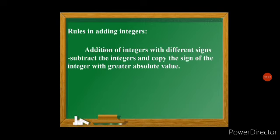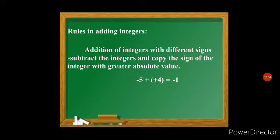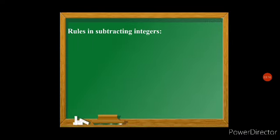For addition of integers with different signs, subtract the integers and copy the sign of the integer with the greater absolute value. For negative 5 plus positive 4: 5 minus 4 equals 1, and since the absolute value of negative 5 (which is 5) is greater than 4, the answer is negative 1. For 10 plus negative 4: 10 is greater than 4, so 10 minus 4 equals 6, and the answer is positive 6.